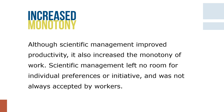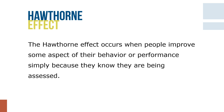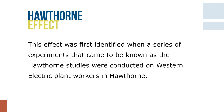The scientific method spawned the discovery of the Hawthorne effect in the 1920s and 1930s. The Hawthorne effect occurs when people improve some aspect of their behavior or performance simply because they know they are being assessed. The Hawthorne effect was first identified when a series of experiments, known as the Hawthorne studies, were conducted on Western Electric plant workers in Hawthorne, just outside of Chicago, to see the effects of a variety of factors including individual versus group pay, incentive pay, breaks, and snacks on productivity.